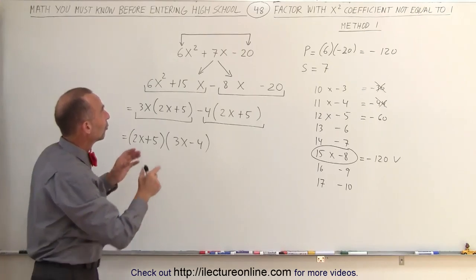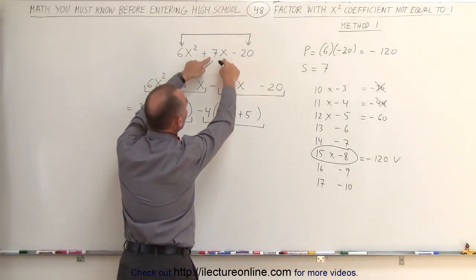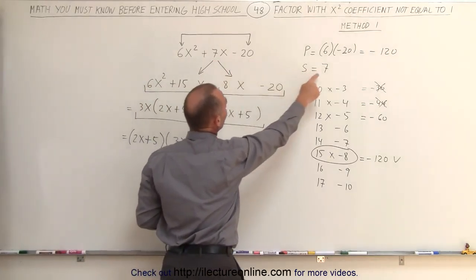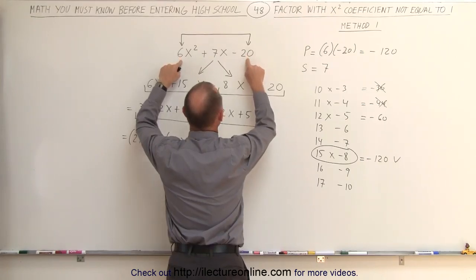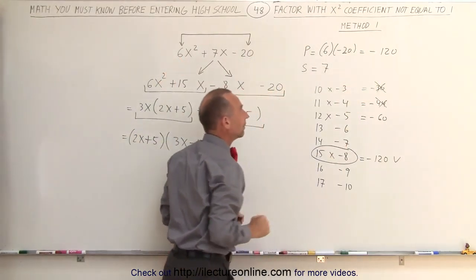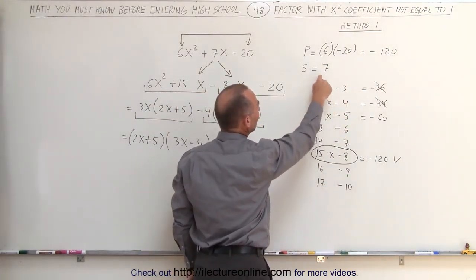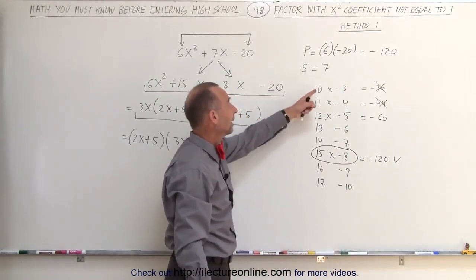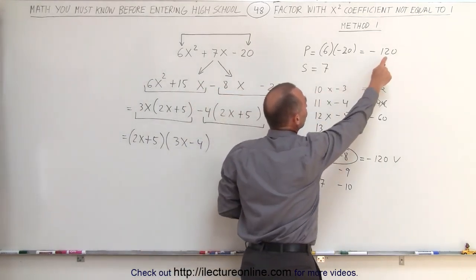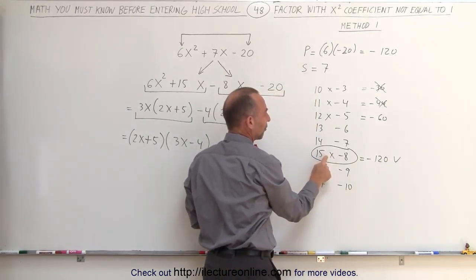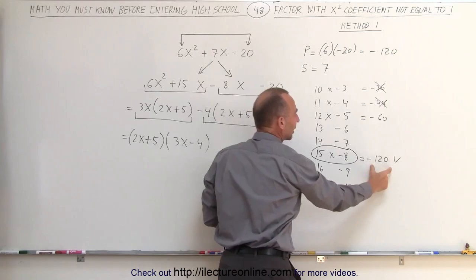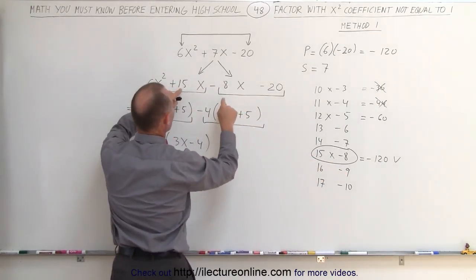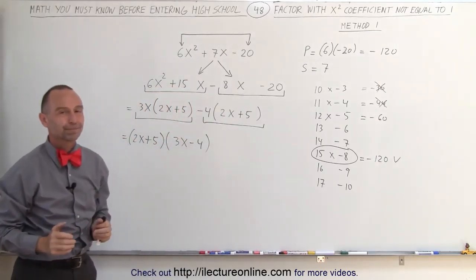To recap: the technique is to rewrite the trinomial as a polynomial with four terms, where the middle term is written as a sum of two middle terms. To find the coefficients, their sum must equal 7 and their product must equal the product of the first and last coefficients — in this case, minus 120. You look for all combinations that add to positive 7; the only combination that also multiplies to minus 120 is 15 and negative 8. You write those two coefficients in, then use the grouping technique to complete the factoring. And that's how it's done.